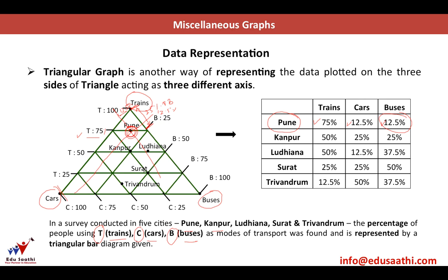Let's take Surat as another example. It lies at the intersection of three axes. The horizontal line gives 25% for train, one line gives 50% for bus, and the car line gives 25% for car. Checking: train 25%, car 25%, buses 50% — all three sum to 100%, confirming our analysis. The main difficulty students face in this question is understanding the graph. I hope you are now clear with this type.